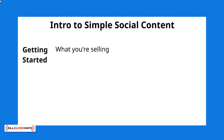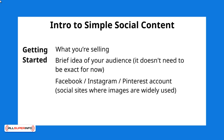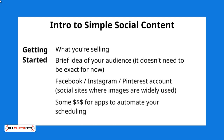Obviously, you're going to need to know what you're going to sell. You'll definitely need to have social media presences such as Facebook, Instagram, Pinterest, and more. You specifically want to target social media sites that are image friendly — for example, Instagram, where most people simply post images; Facebook, where images perform really well; and Pinterest as well. You also need to have a brief idea of your audience — it doesn't need to be exact for now, we'll clarify that — but start painting a picture of what your audience looks like. And of course, you'll need some money for apps to automate your scheduling, though if you're low on money, you can definitely post the images and content yourself without scheduling them.